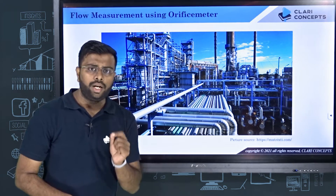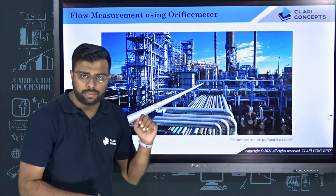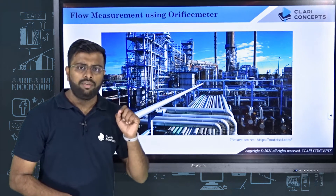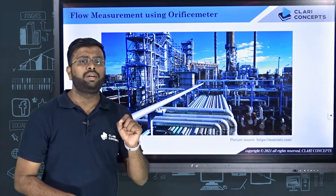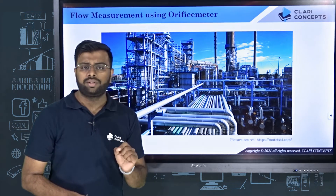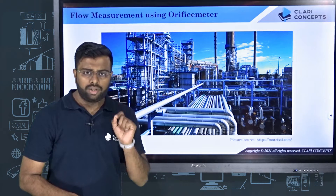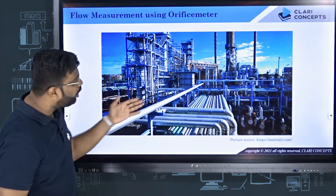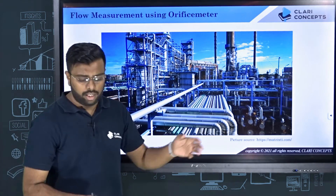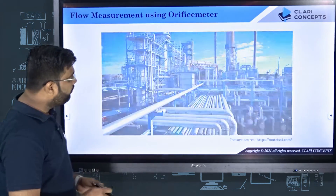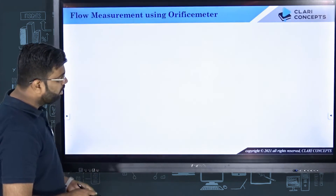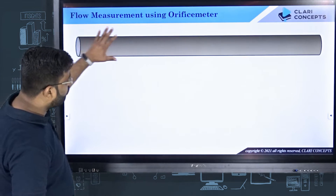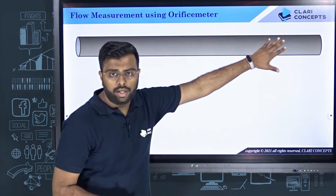As an engineer, you must make sure that a perfect quantity of fluid at a perfect rate is flowing through particular pipes. How do you ensure that? We have seen that there are several mechanical devices to measure the flow rate of the fluid flowing through all these pipes.